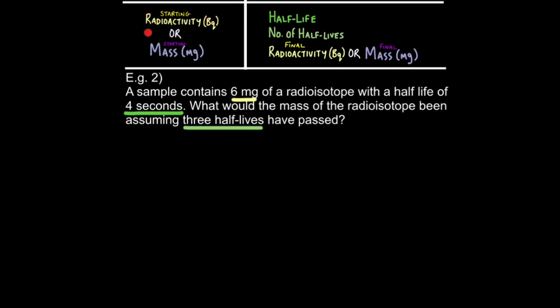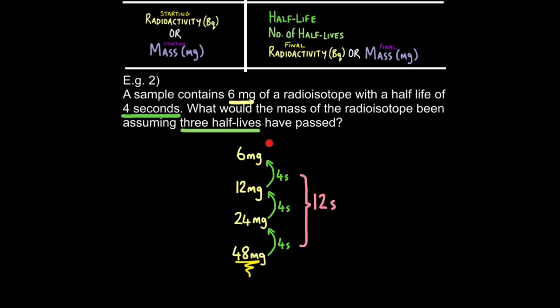In another example, you may have to calculate the starting radioactivity rather than the final radioactivity or the starting mass. It would be the same sort of calculation. Here, you'll be given the half-life, maybe the number of half-lives, and the final radioactivity or mass. For example, a sample contains 6mg of a radioisotope with a half-life of 4 seconds. What would the mass of the radioisotope have been assuming 3 half-lives have passed? Once again, I like to use the same diagram. We know that we're ending with 6mg, and we know 3 half-lives have passed, which are 4 seconds. So we just go 3 half-lives back. 1, 2, 3. Each time now, we are doubling rather than halving because we're working backwards. So 1 half-life doubled, 12mg. Another half-life doubled again, 24mg. Another one, 48mg. We're just doubling 3 times. And that would be your answer.